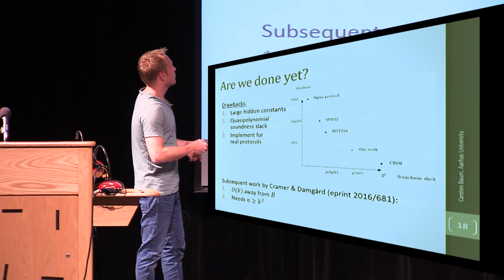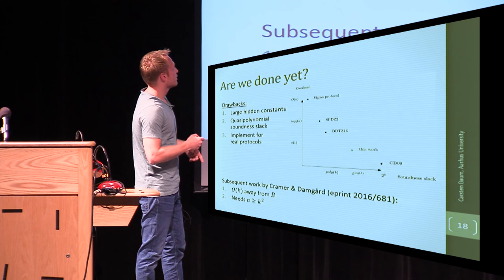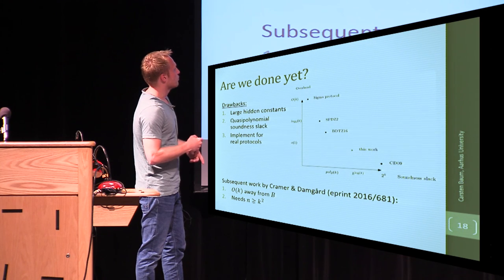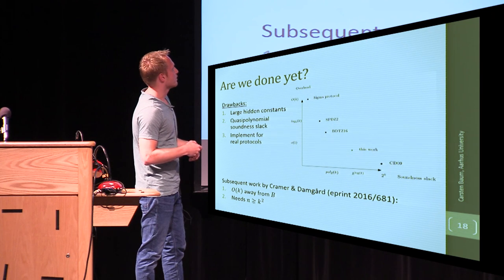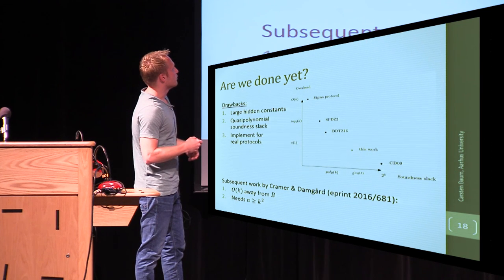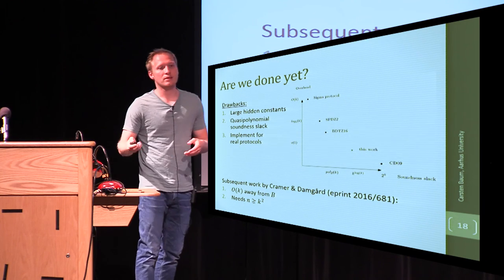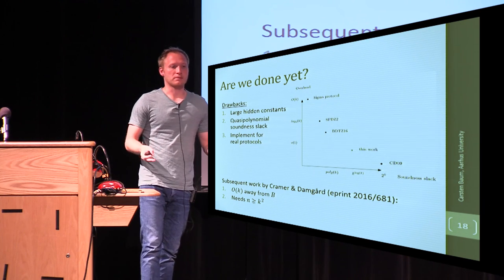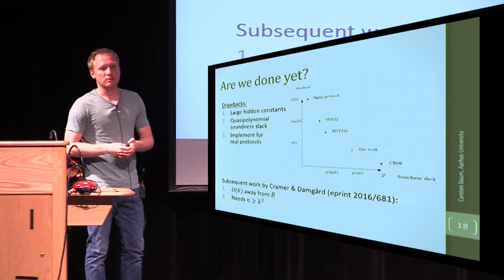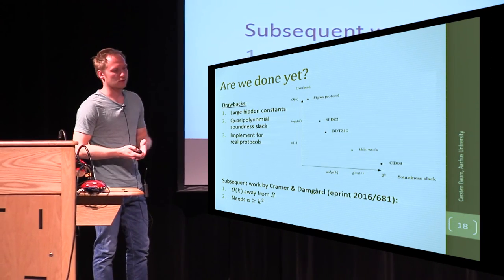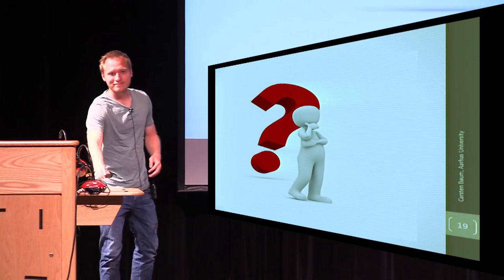So if you compare everything on a graph, this is how the current state-of-the-art looks like. You have sigma protocols at one end of the whole game, you have Kramer Damgaard on the other end, the SPDZ proof here, and we were able to get somewhere close to here. And of course, our long-term goal is to get both the soundness slack and the overhead to be as small as possible. And with those words, I'd like to thank you for your attention, and I'm open for questions.